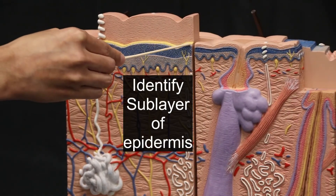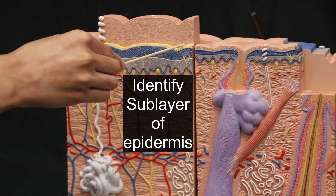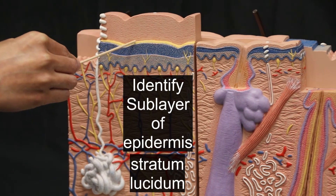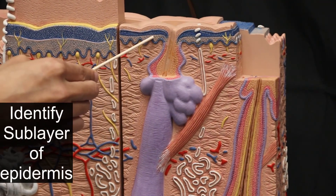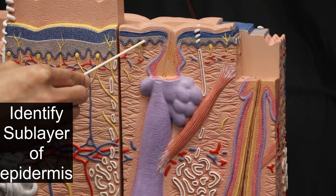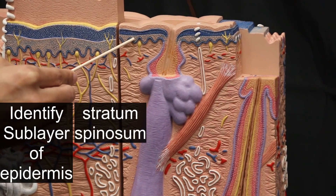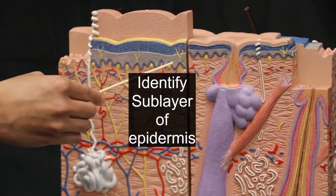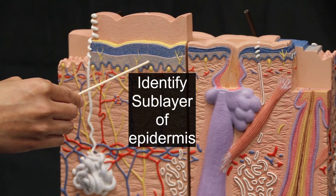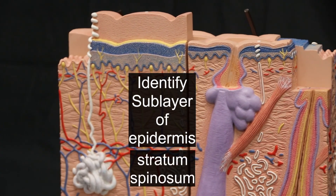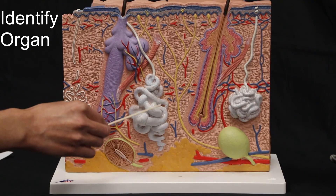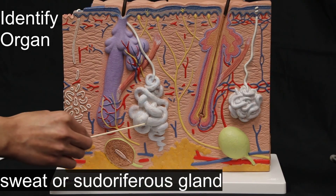ID sublayer of epidermis. Stratum lucidum. ID sublayer of epidermis. Stratum spinosum. ID sublayer of epidermis. Stratum spinosum. ID organ. Sweat or sudoriferous gland.